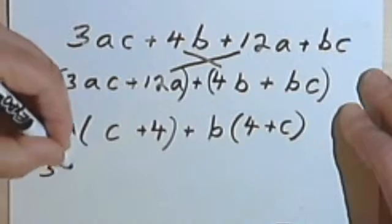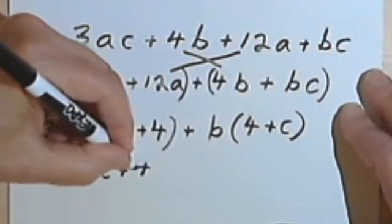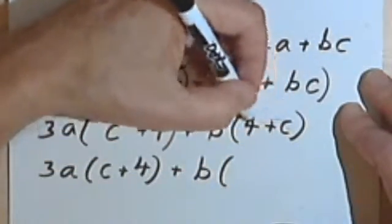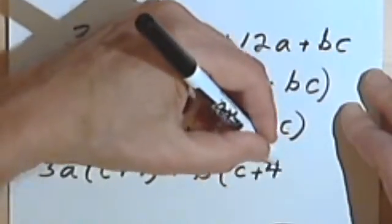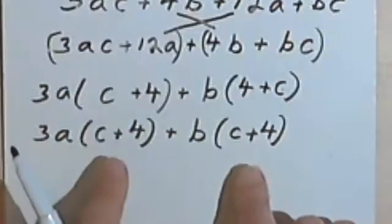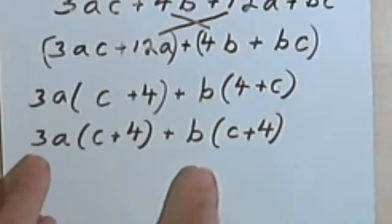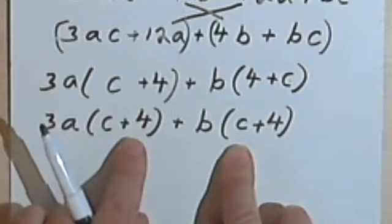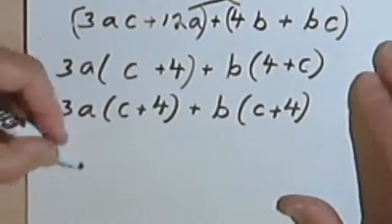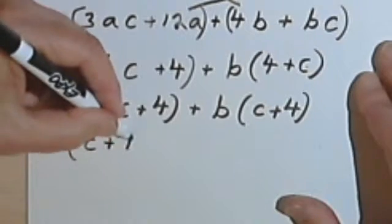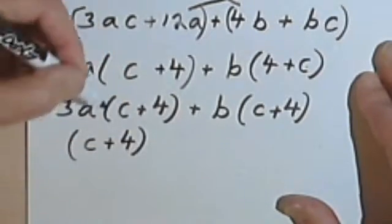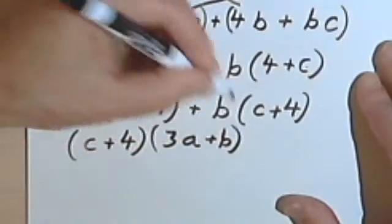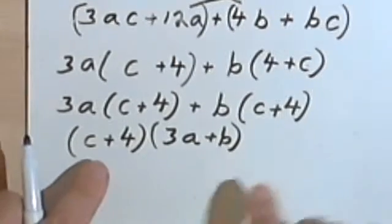So I'm going to rewrite this as 3a times c plus 4, plus b times, swapping these two, c plus 4. So in other words, I'm commuting them also. Now I've got c plus 4 and c plus 4 as a common element in this larger expression. So I'm going to factor out the c plus 4, and that's going to leave me with a 3a plus b, which should be my answer.